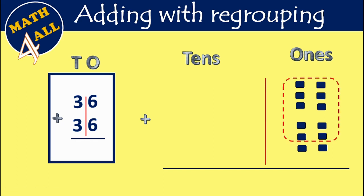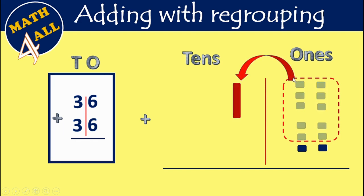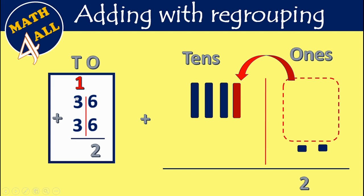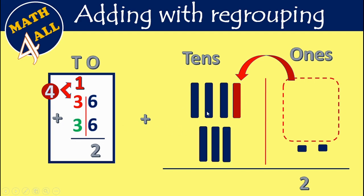Can I write 12 in the ones place? No. Let's take this 10 and put it in the tens place. I will write 2 and carry up 1. That 1 is actually 10. Now we will add in the tens place: 1 plus 3 plus 3. Don't forget — add them: 1 plus 3 equals 4, then 4 plus 3.